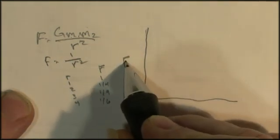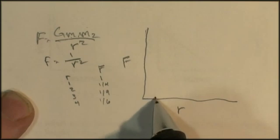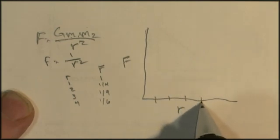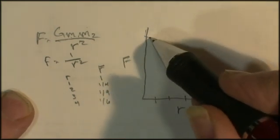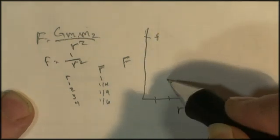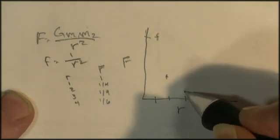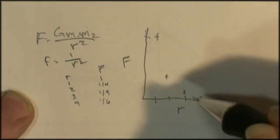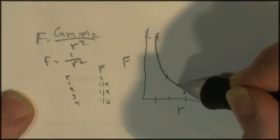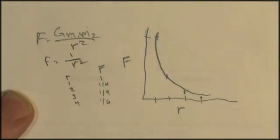So if here's my force and here's my distance, as my distance goes from 1, 2, 3, 4, my force would go from 1 to a 4th to a 9th to a 16th. So this is the graph that represents that relationship. Let's go see if we can find that graph.